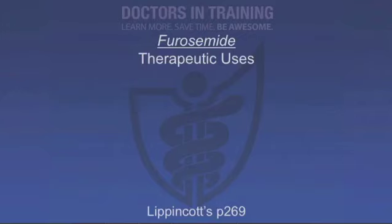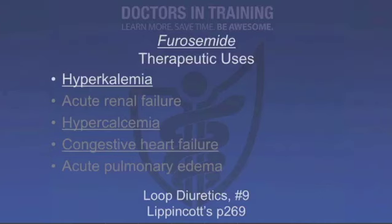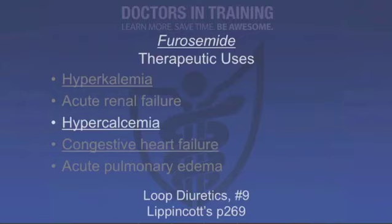The third major clinical use is hypercalcemia. If we can get some of that calcium out, it tends to stabilize the heart membrane. And now let's talk about the diuretic effect. Loop diuretics are the drug of choice for congestive heart failure and for acute pulmonary edema because of their rapid onset. They reduce pulmonary congestion and have been shown to decrease left ventricular filling pressures prior to the diuresis.